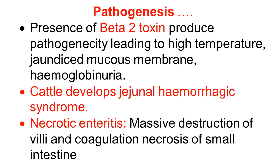The organism also produces beta-2 toxin, which causes pathogenicity and symptoms including high temperature, jaundice of mucous membranes, and hemoglobinuria. These are the consequences of hemolysis. In cattle, it develops jejunal hemorrhagic symptoms, with hemorrhage in the jejunal portion of the small intestine. In most animals, it produces necrotic enteritis, with massive destruction of the villi of the intestine and coagulation necrosis of the small intestine, which is responsible for many symptoms, syndromes, and death of the animals.